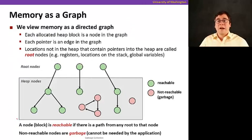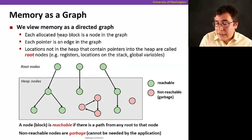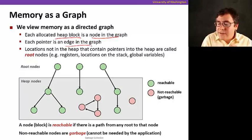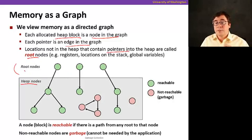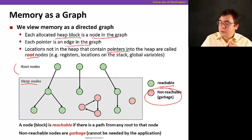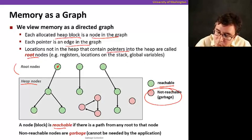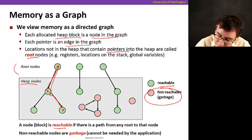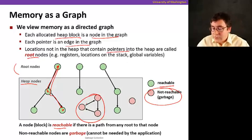So let's get started with the basics. First of all, we're going to look at memory as a graph, as a directed graph. Each allocated heap block is a node in the graph, and each pointer is an edge in the graph. Locations that are not in the heap that contain pointers into the heap are called root nodes. So green nodes here are reachable, meaning that there is a pointer from the roots to them, and the other ones are not, the ones in red are not reachable. And we define reachable as follows. A node is reachable if there's a path from any root node to that node. So for example, this one is green because there's a path, this one is green because there's a path through here, but these ones are not reachable because there's no way to get from any of the root nodes to them. So these ones are the ones that we're going to consider garbage.